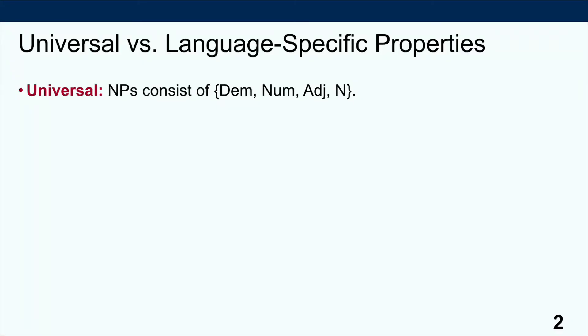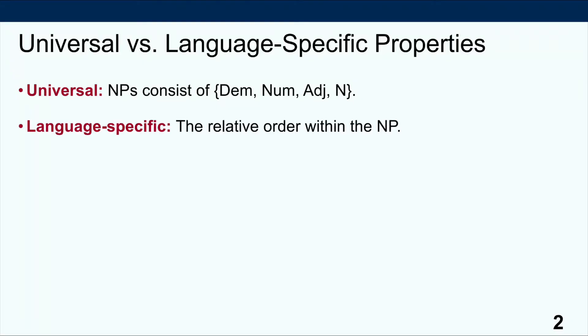When we look at the noun phrase across languages, first of all we can observe that there is something universal to it — namely, in all the world's languages we have these items that we've just enumerated. It's a universal of language that noun phrases consist of the items demonstrative, numeral, adjective, and noun. Conversely, what is language-specific is the relative order of these items within the noun phrase.